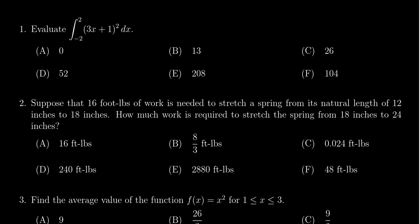My first thoughts when I look at this one is probably just foil the thing out, the 3x plus one squared. If you do that, you would end up with 9x squared plus 6x plus 1.